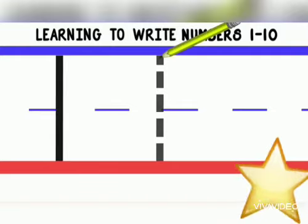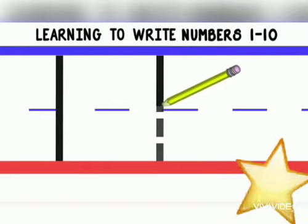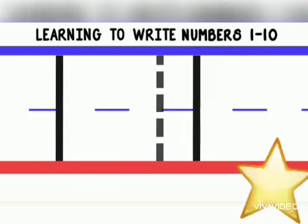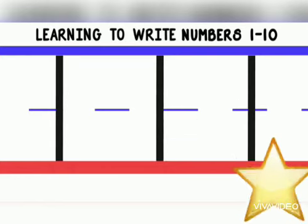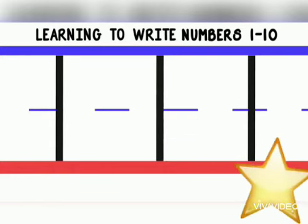While you are tracing the number one, you have to be very careful that you are not going to cross the red line. And how should the tracing be? It should be very accurate on the dots.